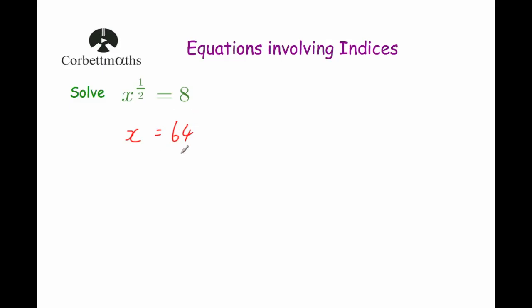To check our answer, we substitute 64 in. So 64 to the power of a half — that's the square root of 64 — which is 8. So that's correct. If you've got an equation where it's x to the power of a half, to solve it you would just square both sides of the equation.